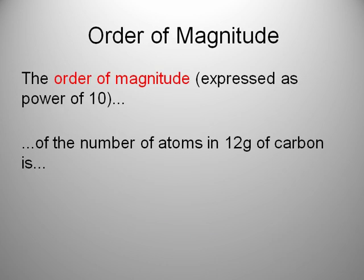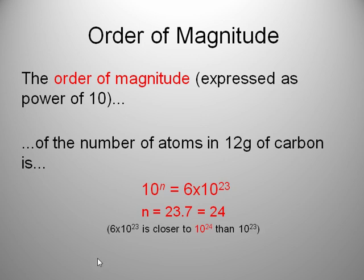The order of magnitude of something can be expressed as a power of 10. If we take the example of the number of atoms in 12 grams of carbon, it was 6 times 10 to the 23rd. How could we express that as a power of 10? We need to use logarithms. If we use logs, we would get n is 23.7. So we would say this is 24 orders of magnitude. 6 times 10 to the 23rd is closer to 10 to the 24th than it is to 10 to the 23rd.